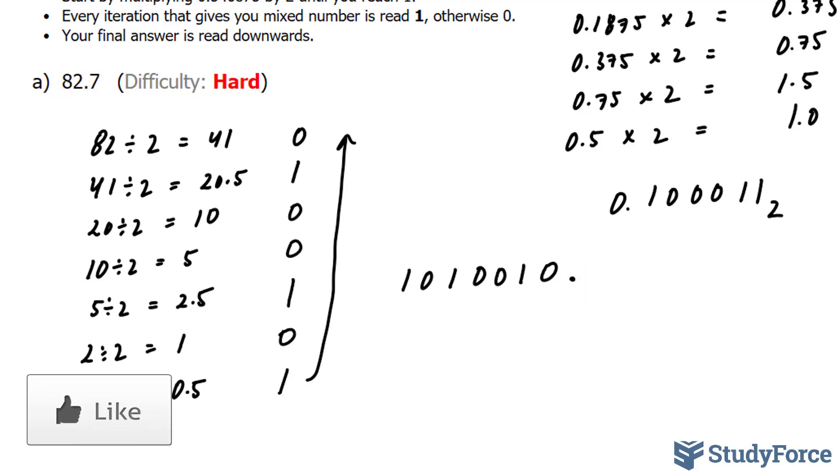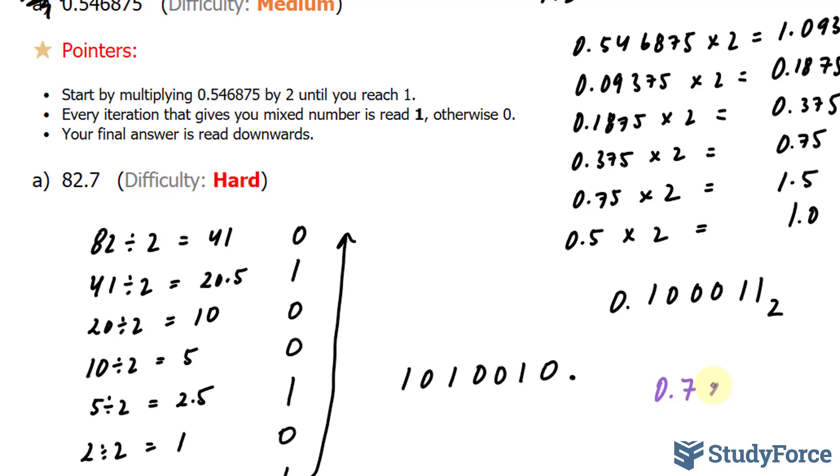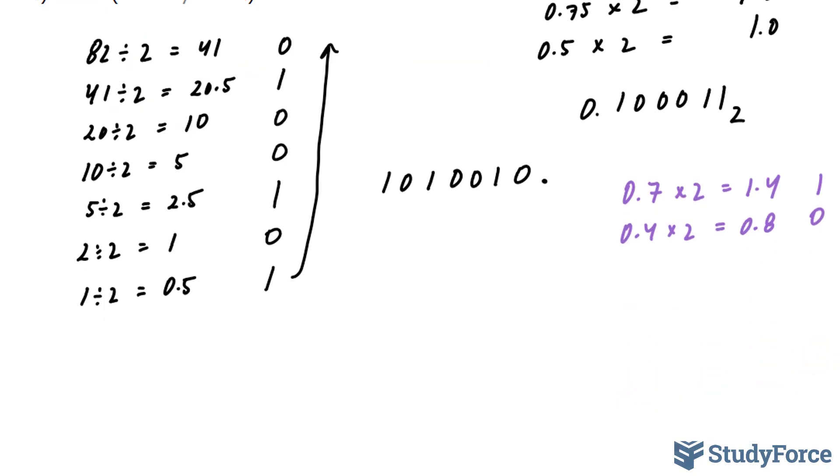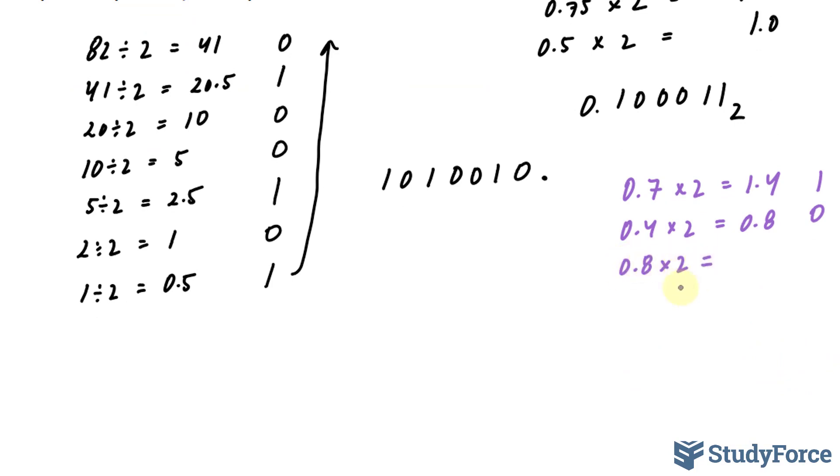To do that, we will have to work on 0.7. The same way we did in Part B. 0.7 times 2 gives us 1.4. I'm going to take this 0.4 and multiply it by 2 again. And 1.4 is read as 1 because we have a mixed fraction. 0.4 times 2 is 0.8. There's no mixed fraction here, so that's read as 0. 0.8 times 2, that gives us 1.6. It's a mixed fraction, so it's a 1. 0.6 times 2 gives us 1.2, another 1, a mixed fraction. 0.2 times 2 gives us 0.4. And that is read as 0.